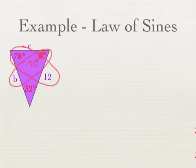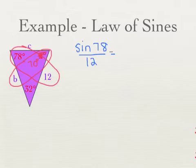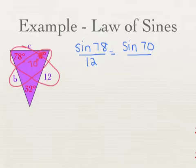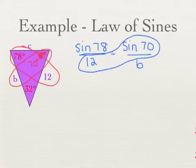The equation is going to look like: sine of 78 over 12 equals sine of 70 over B. The only thing I used the 180 for was to figure out that this would have to be a 70-degree angle. I'm done with 180 after that. Just like before: 12 times sine of 70, divide by sine of 78.